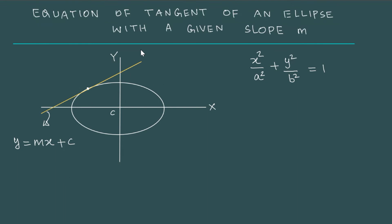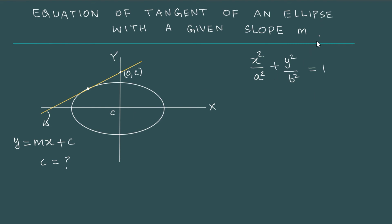In this lesson, we will try to find the equation of a tangent of an ellipse with a given slope m. We are taking the standard equation for an ellipse and this yellow line is the tangent. It cuts the y-axis at (0, c). So y = mx + c is the equation of the tangent, and we need to get the value of c in terms of the parameters of the ellipse, a and b, with slope m given.